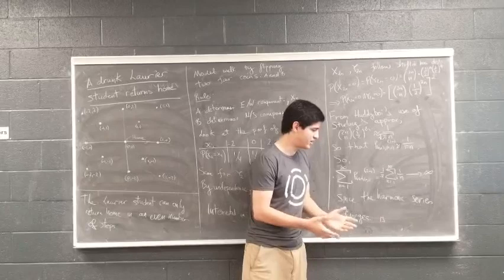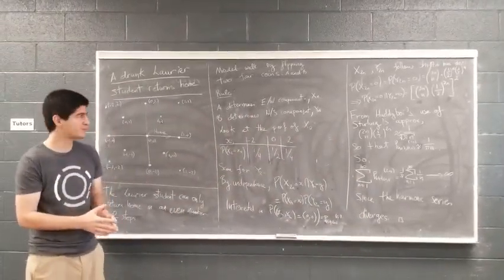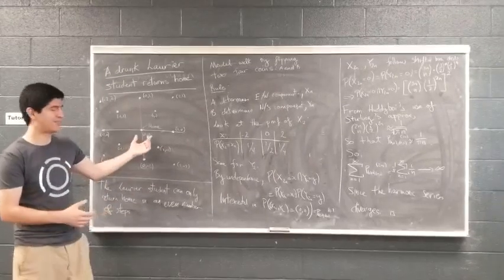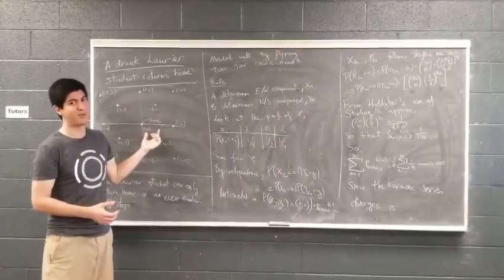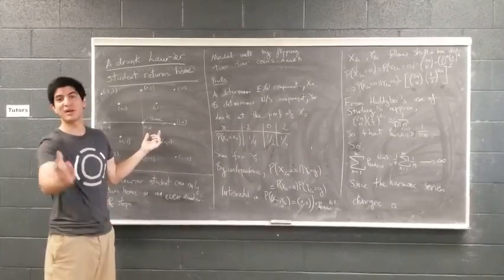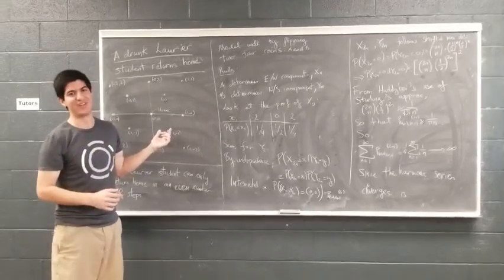And it turns out, given this, every single state is recurrent, so that the Laurier student, after being drunk, returns home infinitely often. But he also goes back to Wilkes infinitely often, goes back to Bricker infinitely often, goes back to Willison infinitely often, but unfortunately never shows up to class.